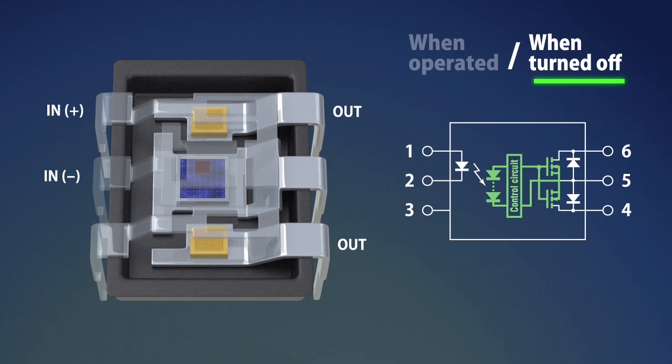When the voltage supplied from the photoelectric element decreases, the control circuit rapidly discharges the gate charge of the MOS FET. This operation makes the MOS FET stop conducting and turns off the load.